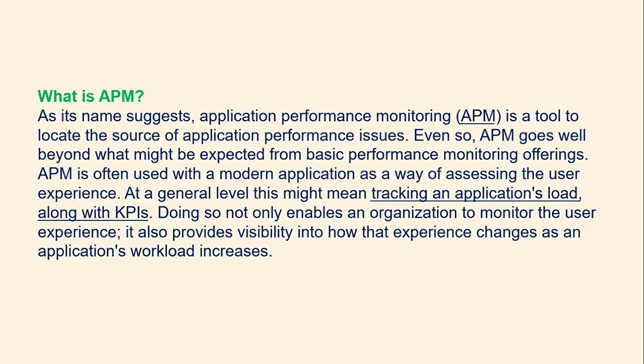APM stands for Application Performance Monitoring. As the name says, it is a tool to locate the source of application performance issues. APM goes well beyond what might be expected from basic performance monitoring offerings. APM is often used with modern applications as a way of assessing the user experience — tracking application load along with KPIs, enabling an organization to monitor the user experience and visibility into how that experience changes as workload increases.